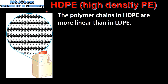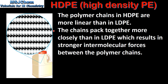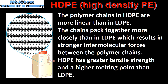Next we look at HDPE, which is high density polyethene. The polymer chains in HDPE are more linear than in LDPE, as you can see in this diagram. This means they are less branched. The chains pack together more closely than in LDPE, which results in stronger intermolecular forces between the polymer chains. Therefore HDPE has greater tensile strength and a higher melting point than LDPE.